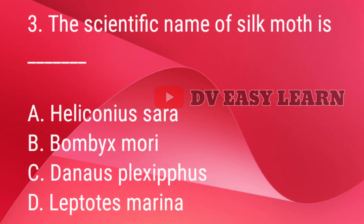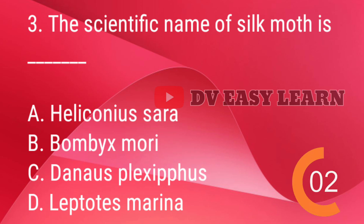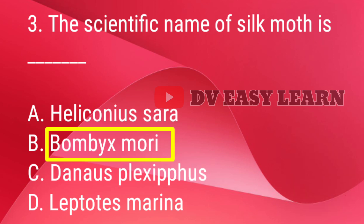Q3. The scientific name of silk moth is — correct answer: Bombyx mori.